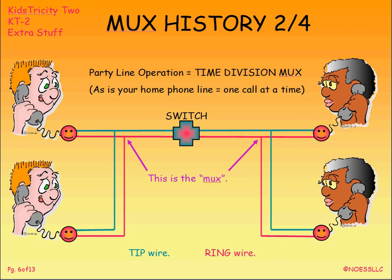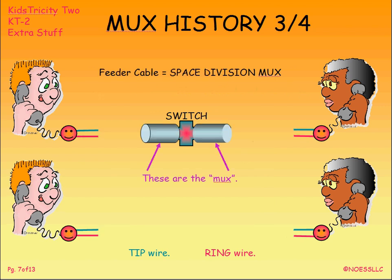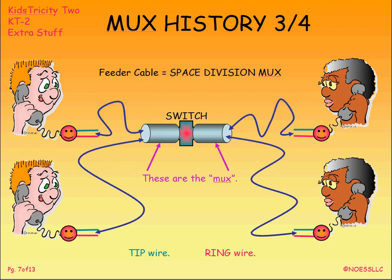That doesn't really tell us about where we're going with the light stuff. Here's an example of what's known as space division multiplexing. There's no box or electronics involved, but think about it: this call's tip and ring wire goes into a large cable. The cable is in fact a space mux because it's carrying multiple calls, and the physical wires are separated in space by the plastic insulation around the wire.